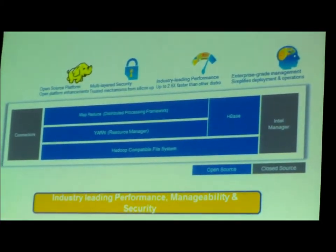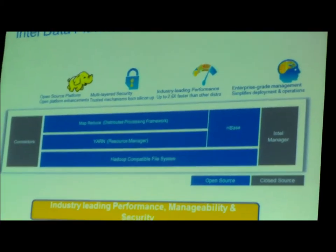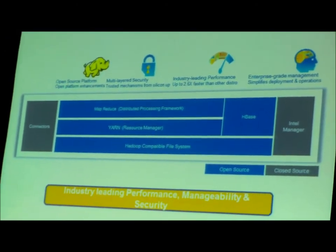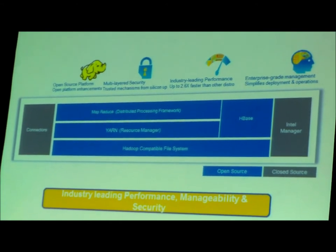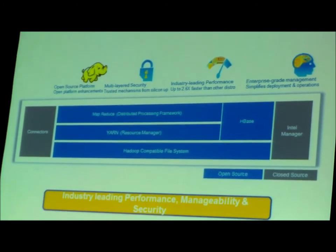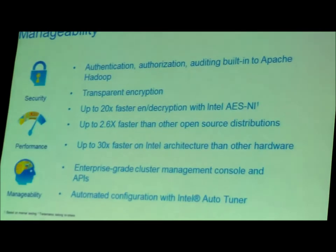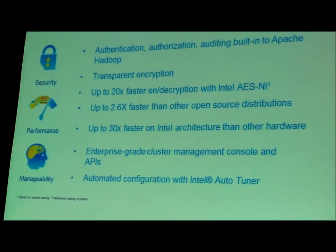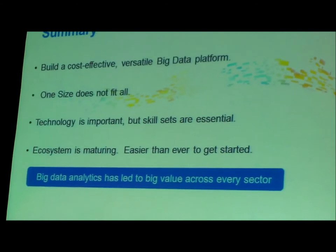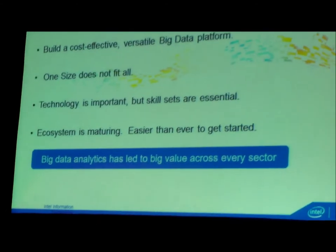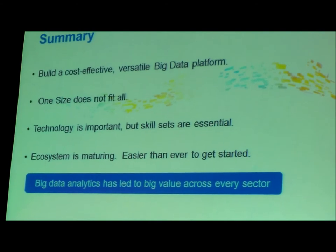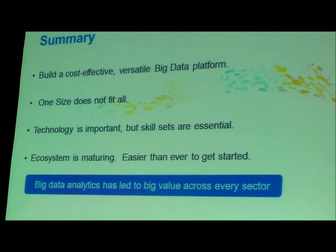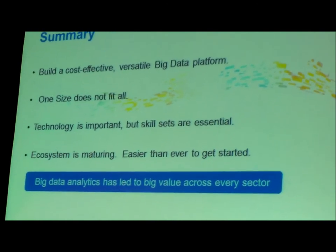We want to make big data accessible — not just in the realm of the few but realizing the benefits for the masses. Our platform includes Yarn, Spark, and Shark, and we feel we can provide real value to differentiate across security, performance, and manageability — for example, 20x faster encryption taking advantage of silicon technologies. The call to action: build a cost-effective data platform. The industry is more mature than ever, so it's easier than ever to get started.